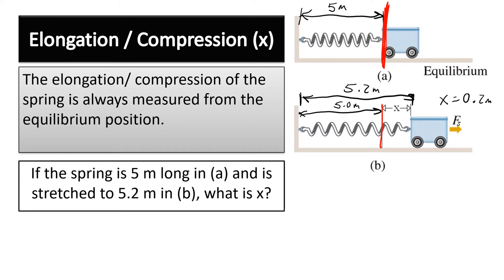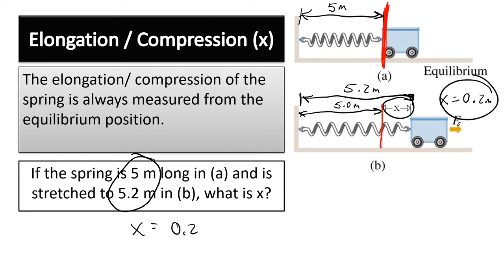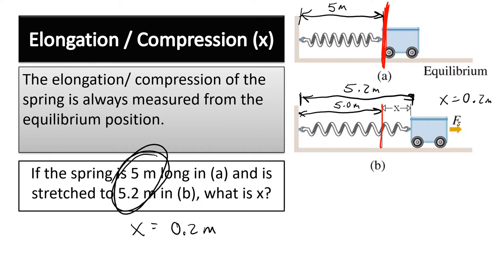This is a way the question might be worded: they'll tell you the spring is 5.0 meters, then stretched to 5.2 meters, and ask you to use Hooke's Law to calculate the force. Neither raw value is x — the stretch distance is 0.2 meters, the difference between them. Sometimes they'll just say it's stretched 0.2 meters directly.